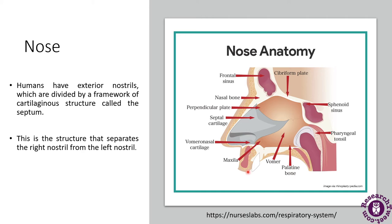Humans have exterior nostrils divided by a framework of cartilaginous structure called the septum. This is the structure that separates the right nostril and the left nostril, so there are two nostrils in the nose.